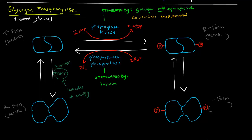There are two allosteric inhibitors: ATP and glucose 6-phosphate (G6P). These both indicate high energy. ATP indicates high energy directly, whereas G6P indicates that we already have plenty of glucose around. So there's no sense in freeing up more glucose if we already have plenty — these inhibitors favor the T form and inactivate the phosphorylase.